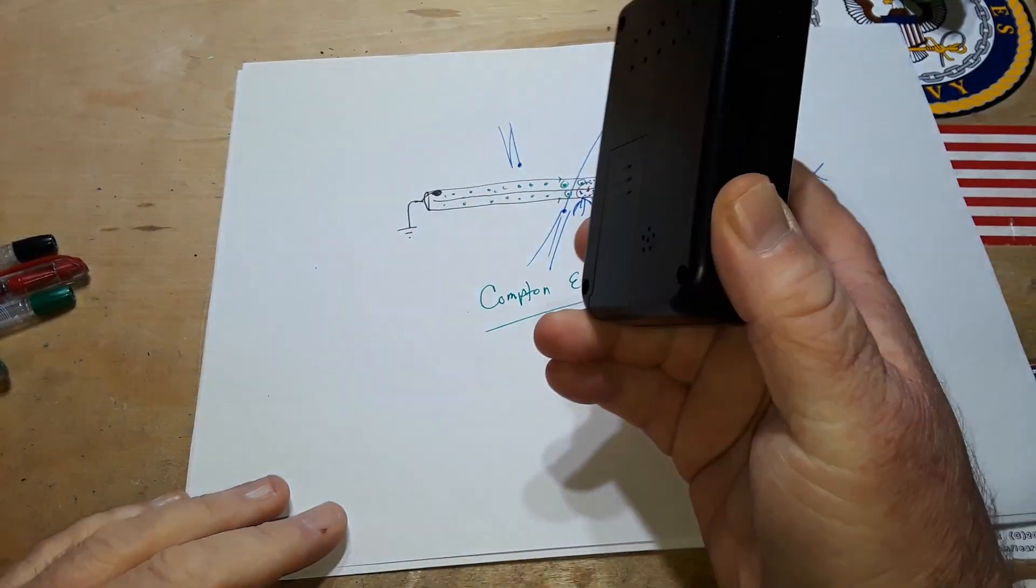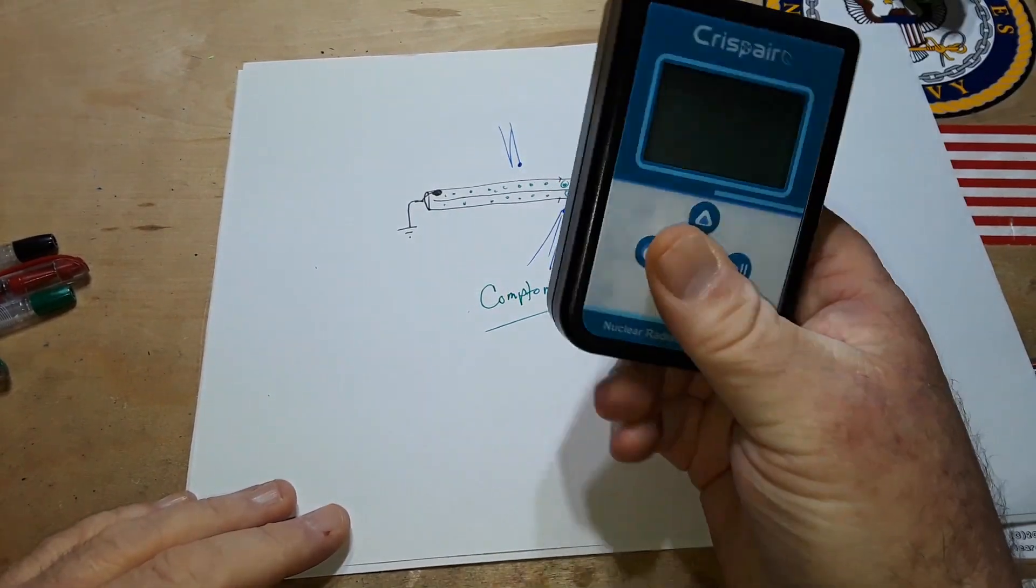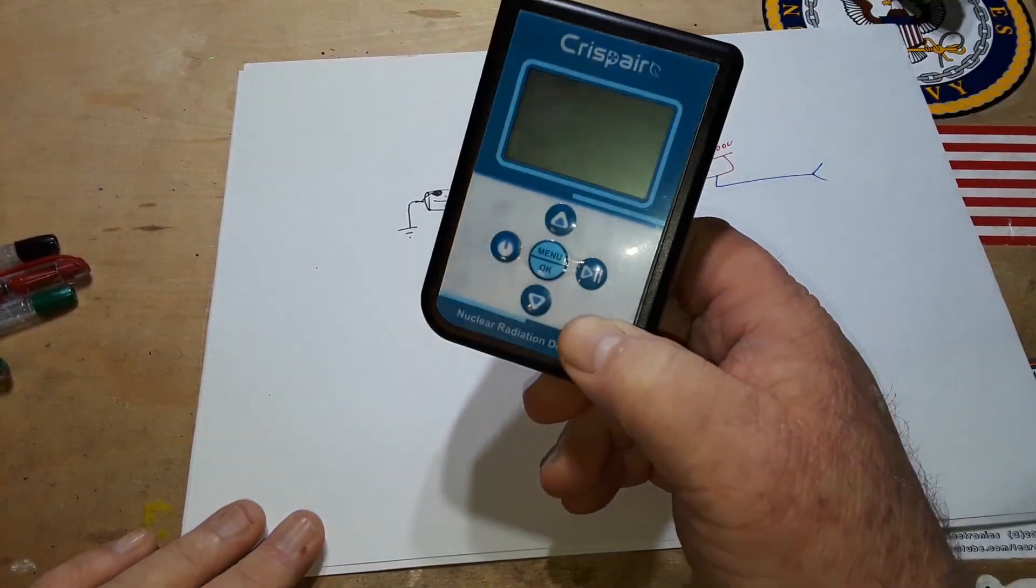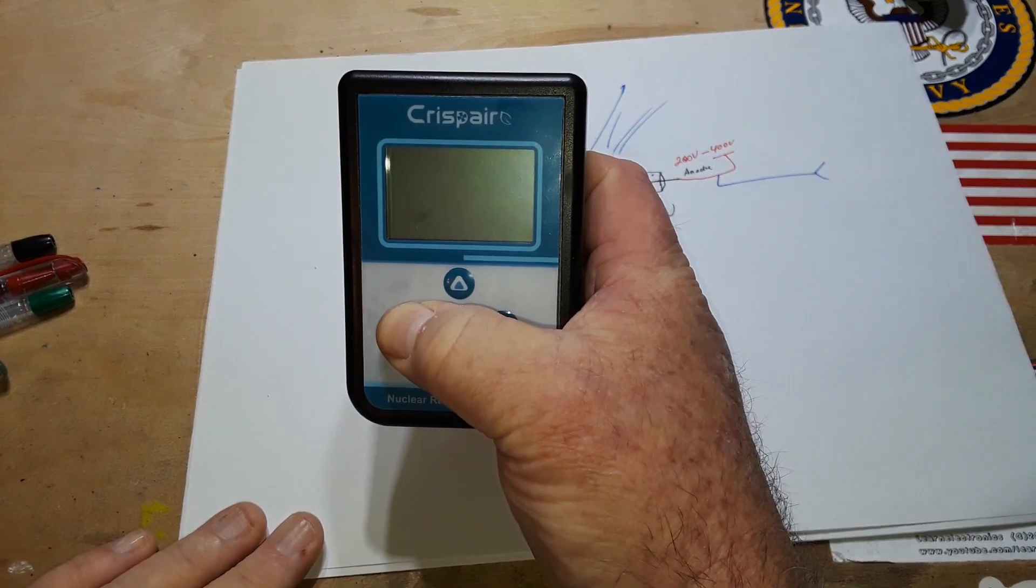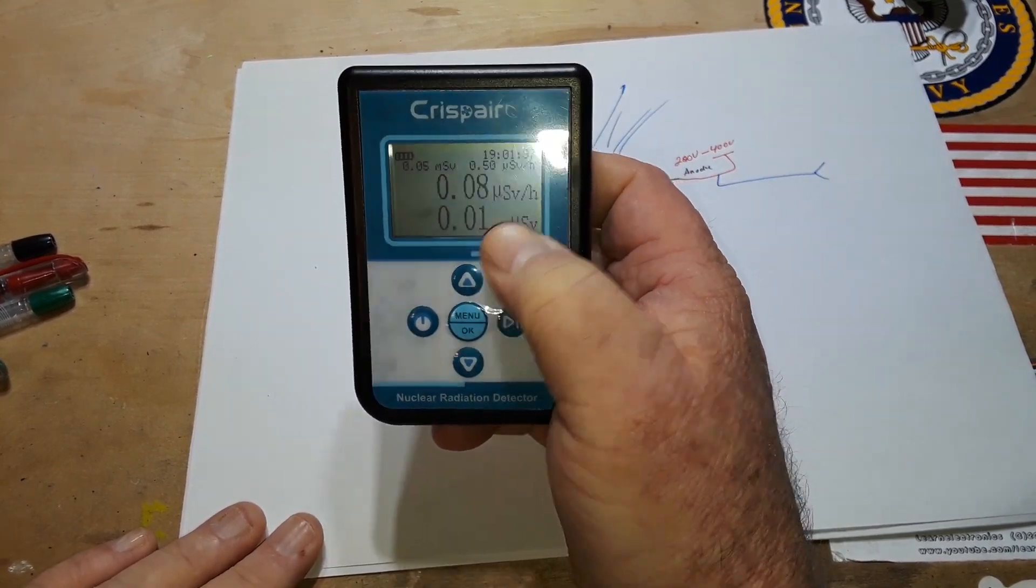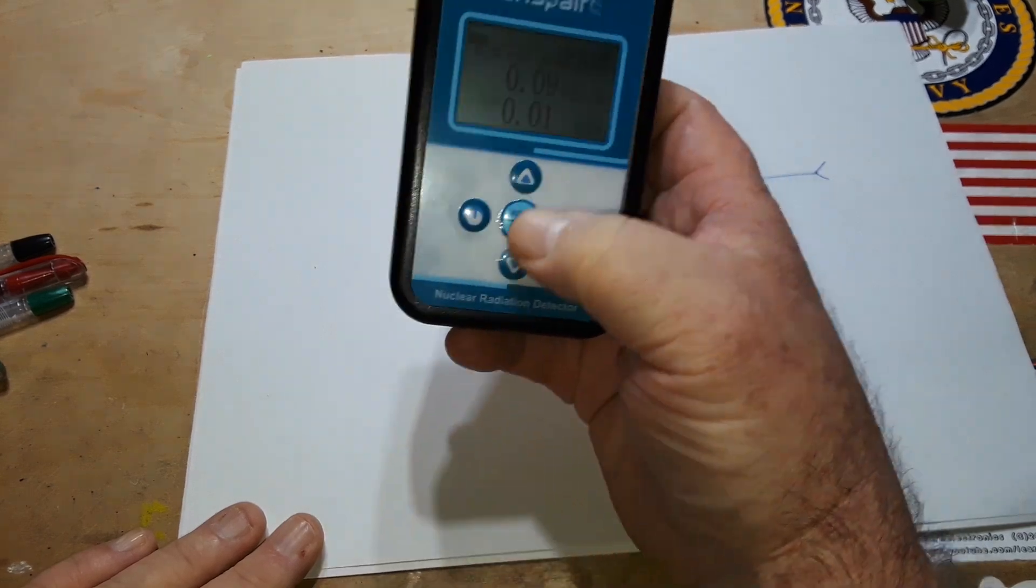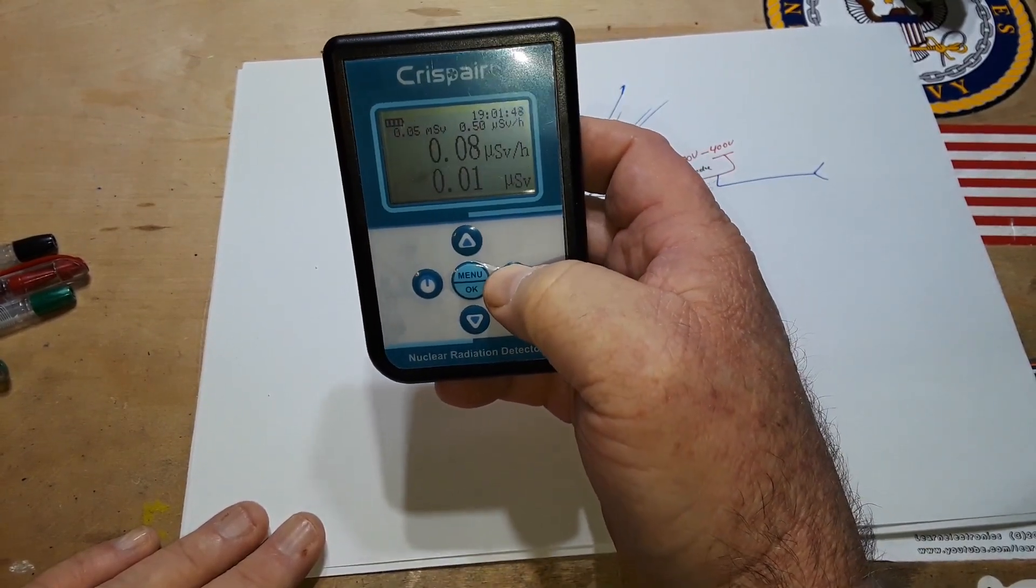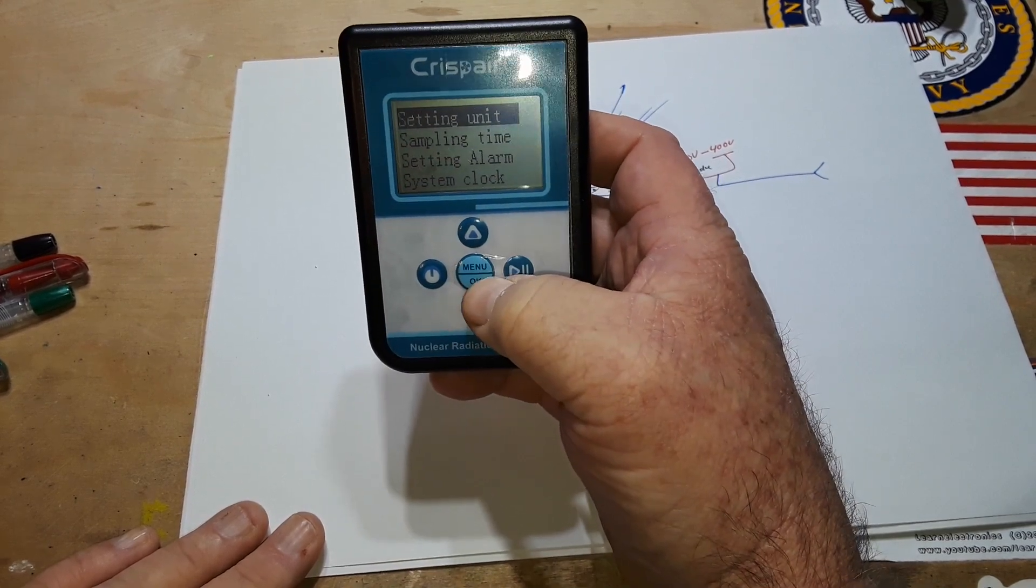Anyway, got your counter. You can get them super cheap. I'll put a link to this one, like I said, it's like less than $25. And they're fun to play with. You know, turn it on. This one's reading in micro-sieverts, but you can change it to read in the... Whoops, let me try this again. Setting unit.